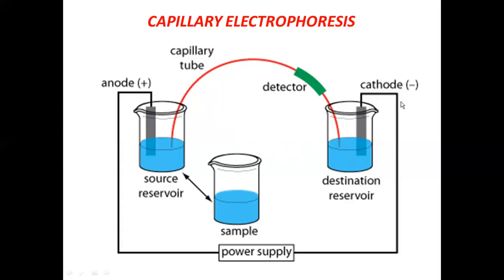The source reservoir contains the anode and the destination reservoir contains the cathode. The terminals of the anode and cathode are connected to the positive and negative terminals of the power supply device, making the anode positively charged and the cathode negatively charged. The sample is introduced into the capillary tube from the source reservoir, which has a direct connection to the sample reservoir.